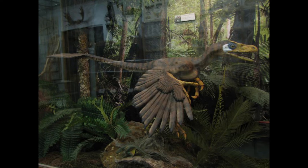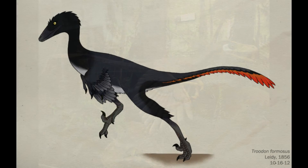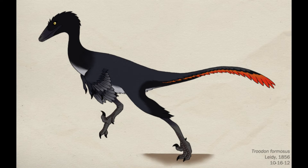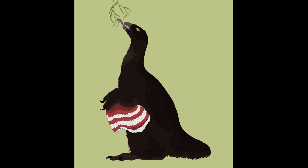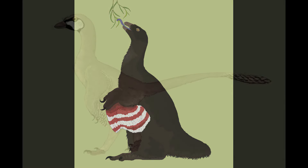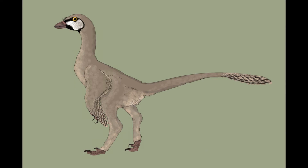By the end of the Eocene, Troodontid Troodontans had died out. The only members of this clade present in Asia were the large, browsing Nothrosaurids and the small, beaked Proteoraptor — a recent immigrant from North America.